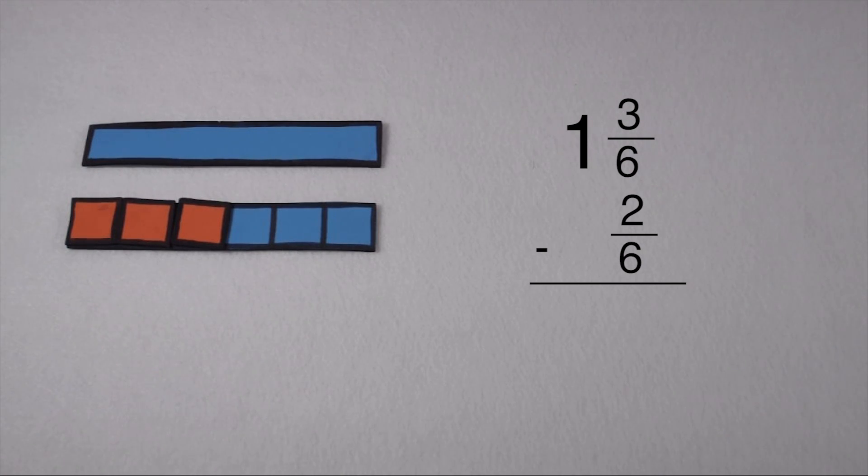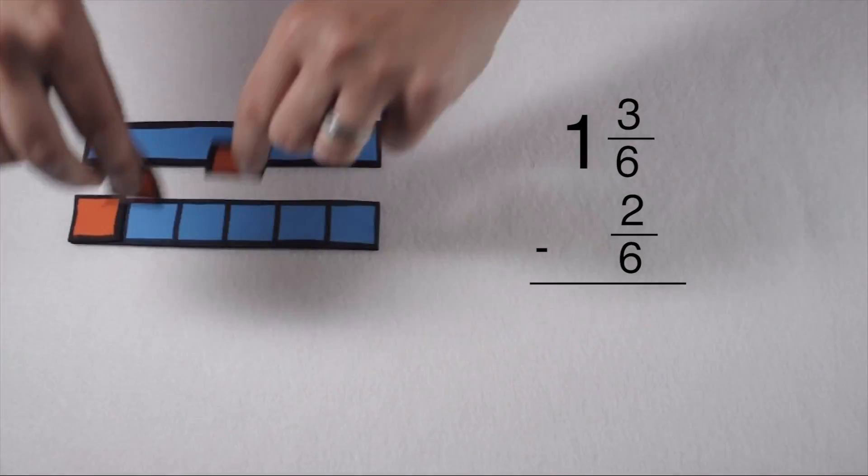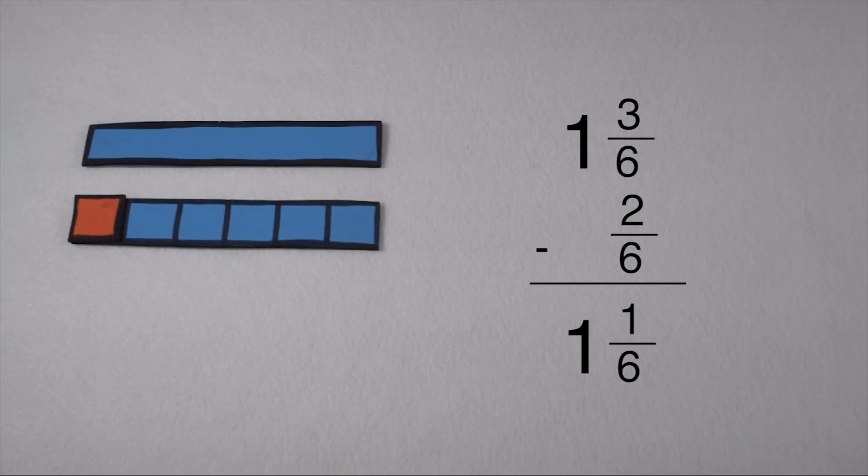This means I have 1 and 3 sixths minus 2 sixths, so I can simply take away 2 pieces, which leaves us with the final difference of 1 and 1 sixth.